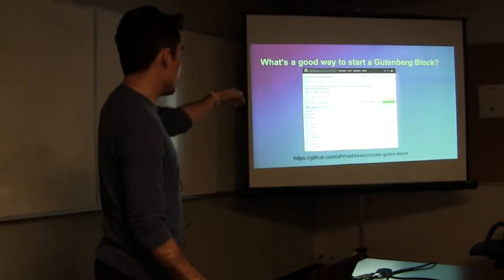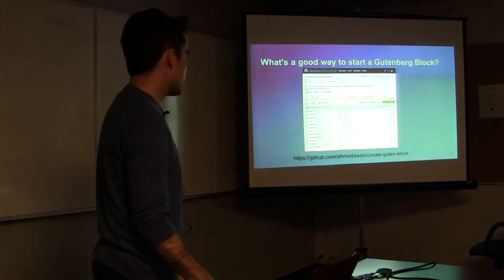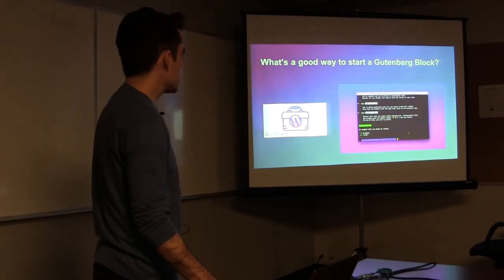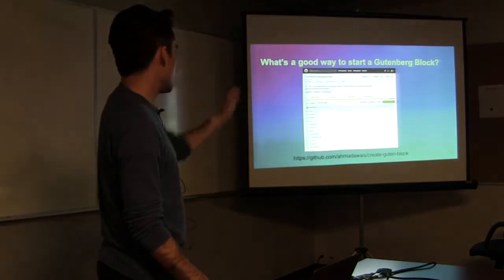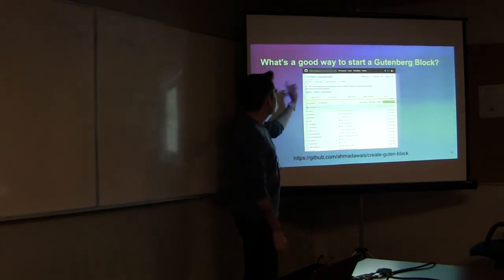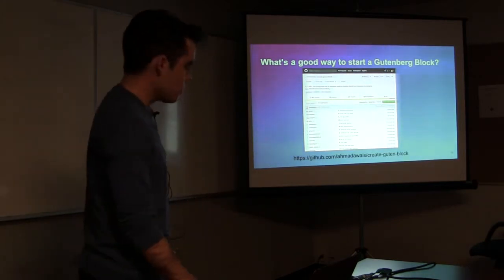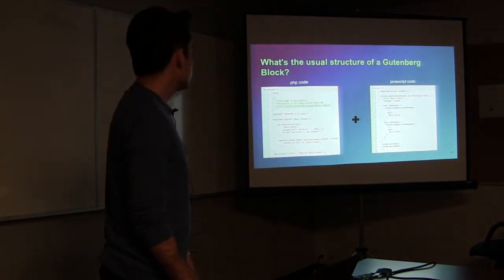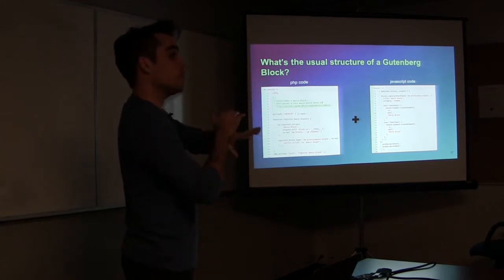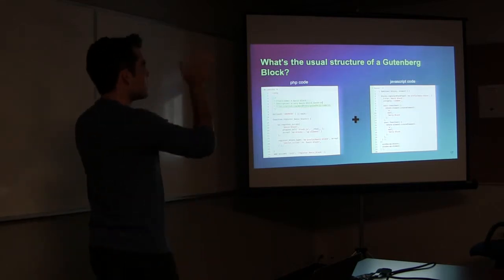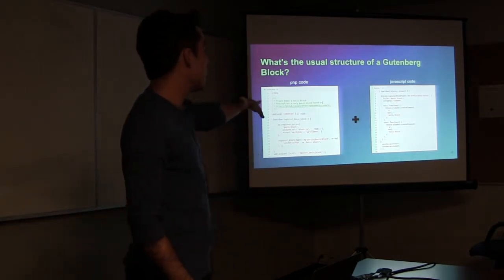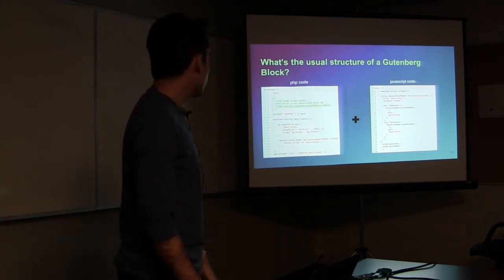That repo is called Create Guten Block from a popular guy in the WordPress community called Ahmed Awais — zero configuration developer toolkit for building WordPress Gutenberg block plugins. What's the usual structure of a Gutenberg block? A very simple one is PHP code and a JavaScript file — that's it. The minimal one will be a PHP file and a JavaScript file. These files can go inside a plugin or inside a theme.